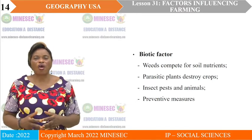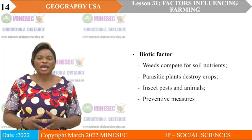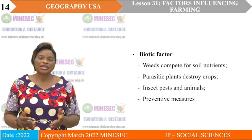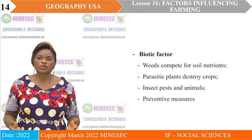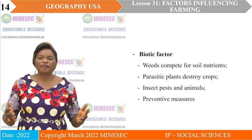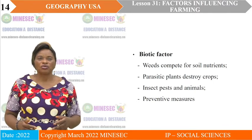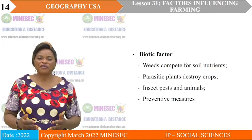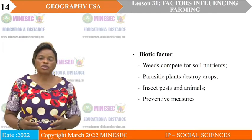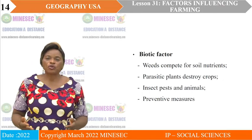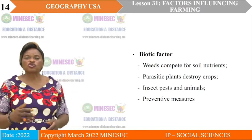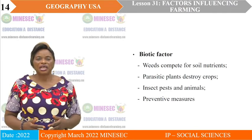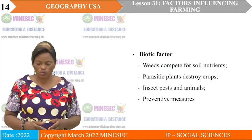Insect pests and animals are also a factor influencing agriculture. Insect pests like locusts in the Sahel region destroy crops and cause crop failures. Animals like elephants in northern Cameroon and rabbits in Australia are very destructive where they exist. People usually take preventive measures such as spraying farms with pesticides, insecticides, or fungicides to get rid of these threats and enable crops to grow.